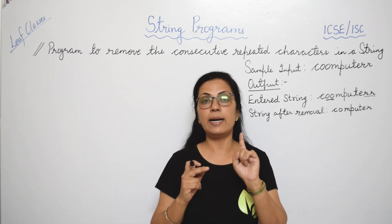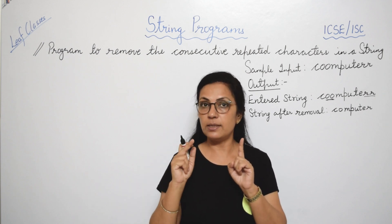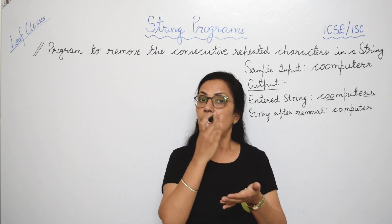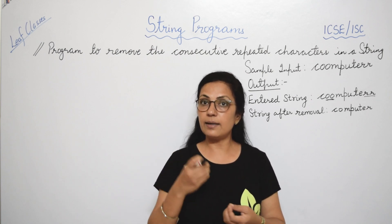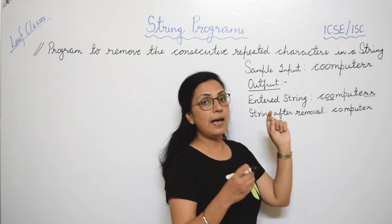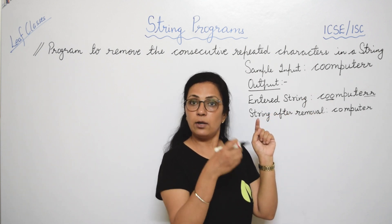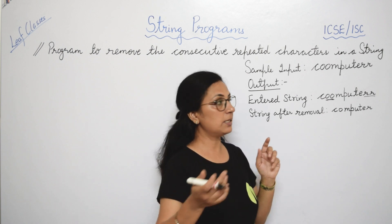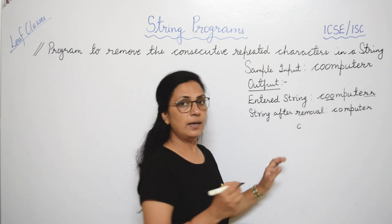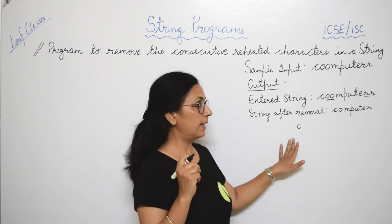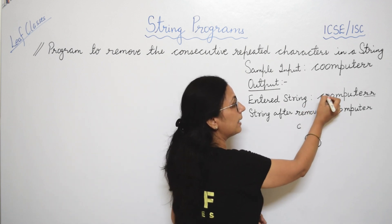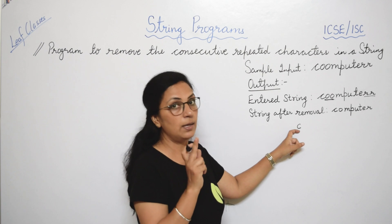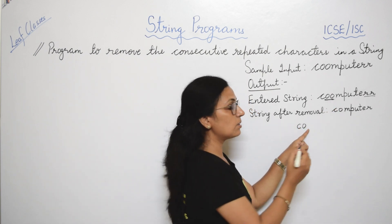The first character is stored at the 0th index number and the last at string length minus 1. We have to check characters by repeating the process from the first to the last character. We extract each character and check whether the previous character is equal to the current one. If 'c' is not equal to 'o', we will write 'o'.